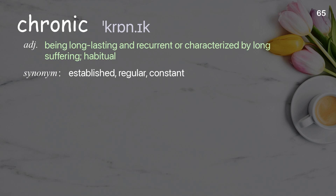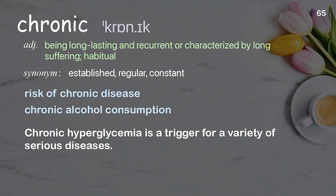Chronic: Being long-lasting and recurrent or characterized by long-suffering; habitual. Examples: Risk of chronic disease. Chronic alcohol consumption. Chronic hyperglycemia is a trigger for a variety of serious diseases.